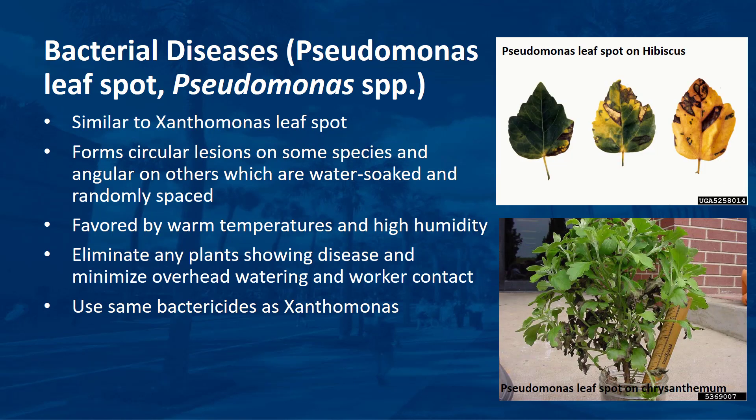Pseudomonas leaf spot has many similarities to Xanthomonas leaf spot. Pseudomonas forms circular lesions on some species and angular lesions on others. These lesions are water-soaked and randomly spaced on the leaves. The warm temperatures and high humidity commonly seen during summer favor the pathogen. The first line of defense is exclusion — eliminate plants showing disease. Minimize overhead watering and worker contact, especially if plants are wet. The same pesticides for Xanthomonas leaf spot work for Pseudomonas leaf spot.